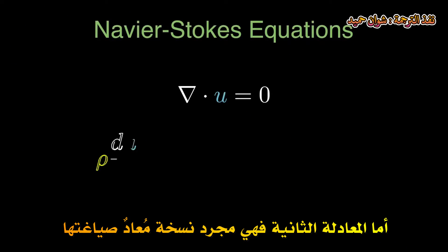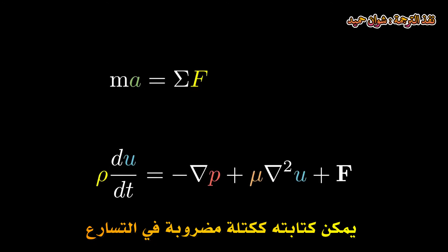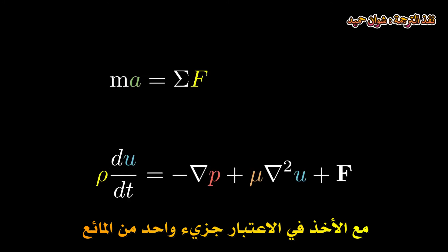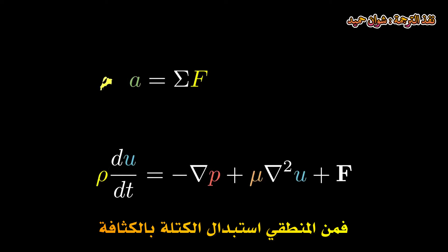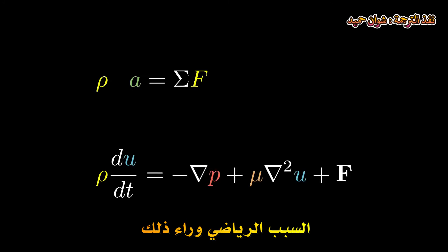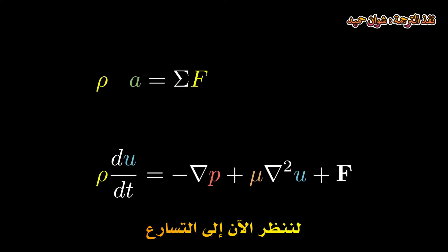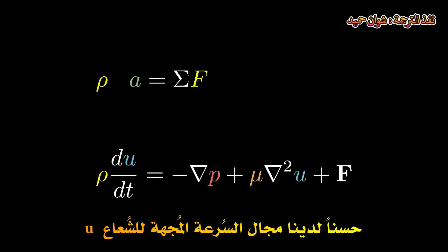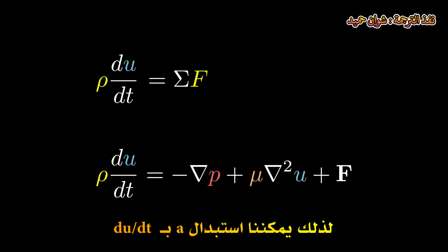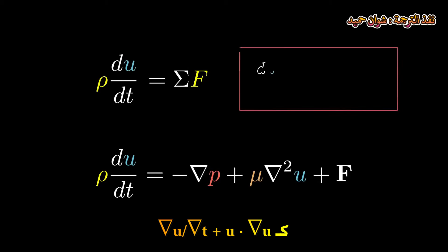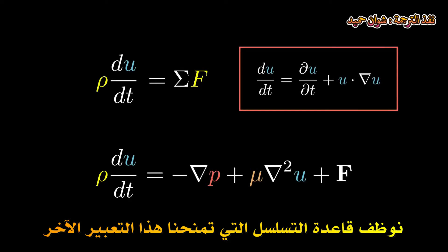This second equation is just a rewritten version of Newton's second law, which tells us that the sum of forces acting on a body equals its mass times acceleration. Considering this for a single molecule of a fluid, let's derive the second Navier-Stokes equation. Since we're considering each individual point, we replace mass with density — mass divided by volume equals density. Next, the acceleration is just the derivative of the velocity vector field, so we replace a with du/dt. You might see this written as ∂u/∂t + u·∇u, which is the same thing — expanding du/dt using the chain rule gives that expression.